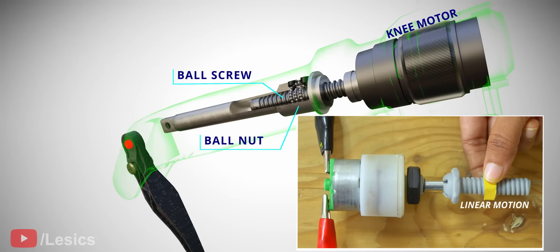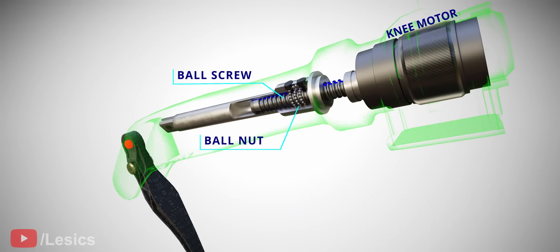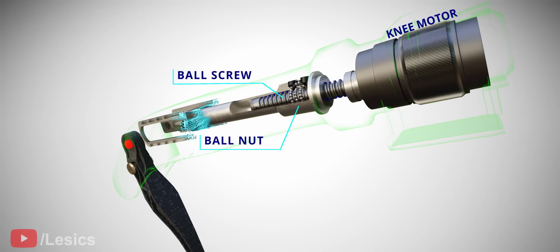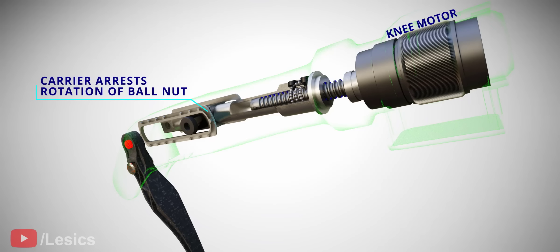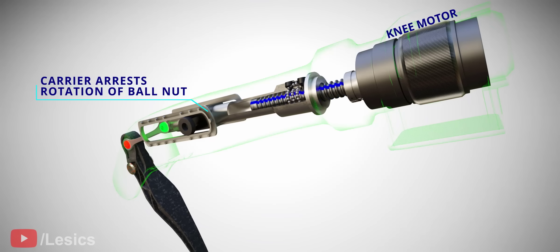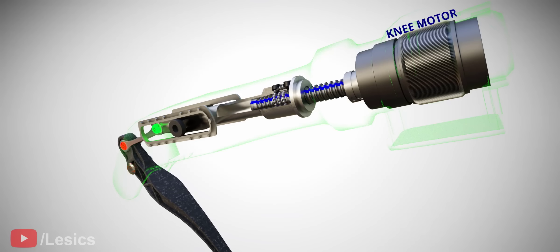However, when you arrest the nut, you get a linear output motion from the nut. In the robot ball screw arrangement also, there won't be any linear motion if the ball nut is not arrested. This is why a carrier is used. The carrier arrests the rotation of the ball nut and the ball nut moves linearly.